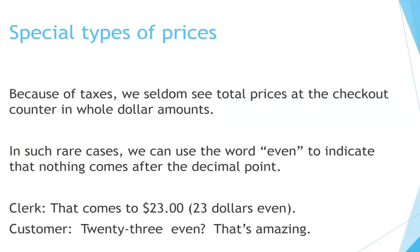Special types of prices: because of taxes, we seldom see total prices at the checkout counter in whole dollar amounts. In such rare cases, we can use the word 'even' to indicate that nothing comes after the decimal point. For example — Clerk: 'That comes to $23 even.' Customer: '$23 even? That's amazing!'